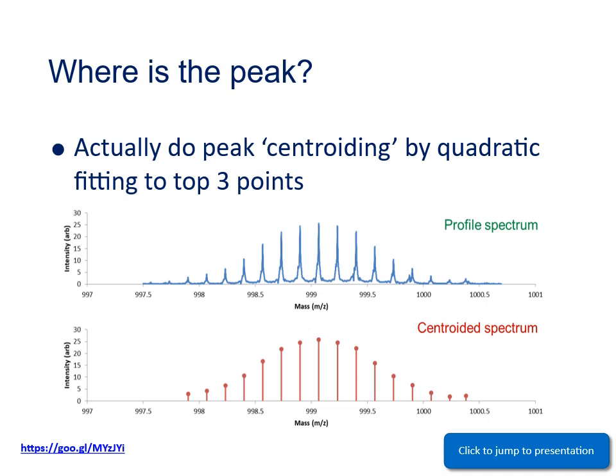In the workshop we'll run through some examples. But for now, look at the two spectra on the screen here. These are from the same data, but in the top view you can see the shape of the peaks, and this is known as the profile spectrum. Whereas in the bottom view you can only see the peaks as individual sticks, where the height shows the intensity and the stick shows the position of the peak. And this is called the centroided spectrum or stick plot.